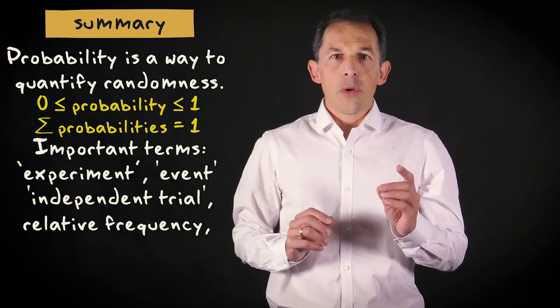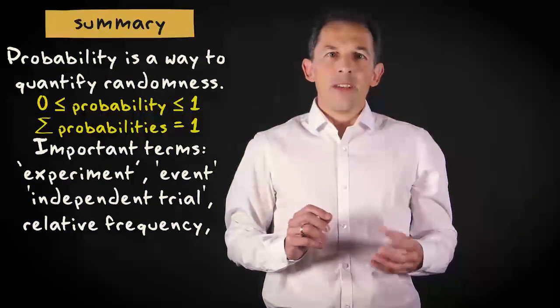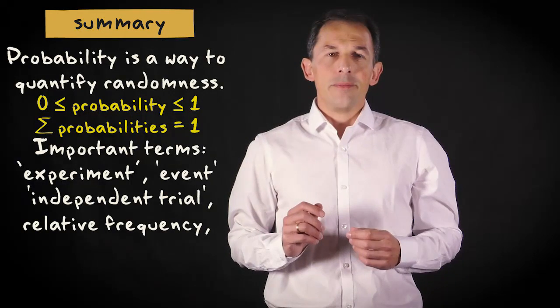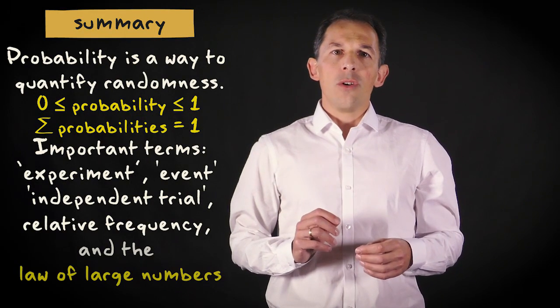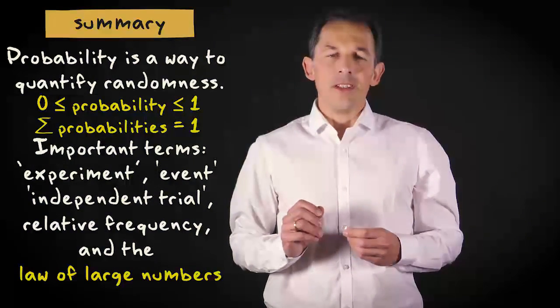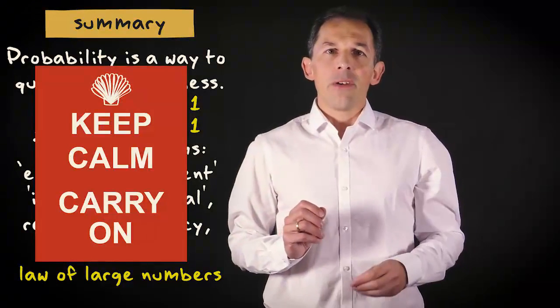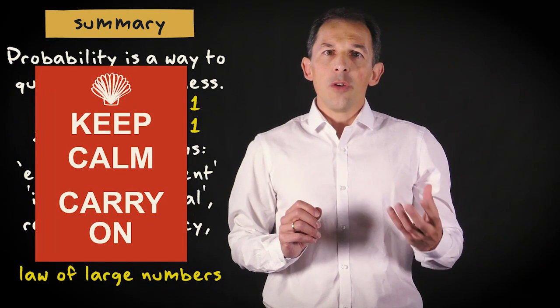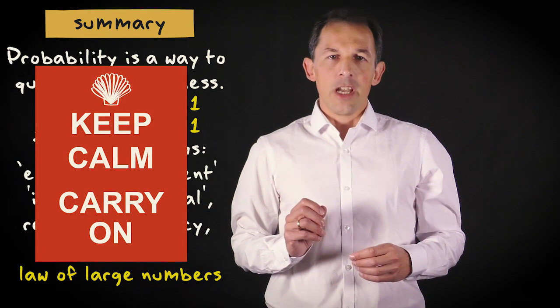For example, throwing one with a die is an event, and each throw would be an independent trial. A good way to translate the law of large numbers to a practical guideline for estimating probabilities is stay calm and carry on doing trials until a cumulative probability is not changing much anymore.